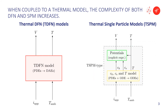When we add temperature to the model — for example, by coupling the DFN model with the thermal model, which is the TDFN — we add an extra layer of complexity because now we have an extra input, which is the ambient temperature, and an extra output, which is the cell temperature. But for the TDFN, we still need to do all the solving at once, which is a high-complexity problem — a system of coupled PDEs.